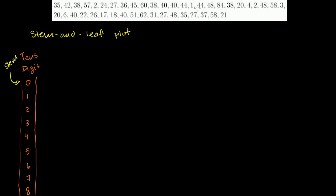For a number like 1, the tens digit is 0 — you could imagine it is 0, 1. For a number like 84, the tens digit is obviously 8. So what I'm going to do is rewrite all of these numbers using the stem and leaf plot. The technique here — I'm just going to show you by example — let's go through each of these numbers.